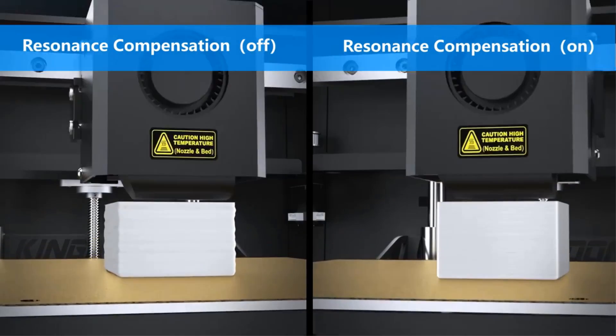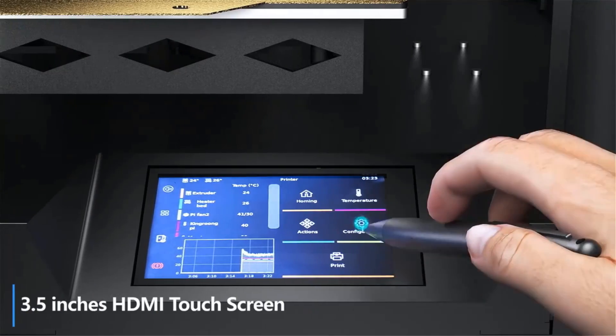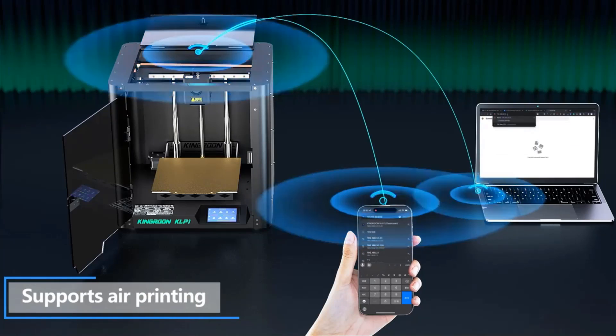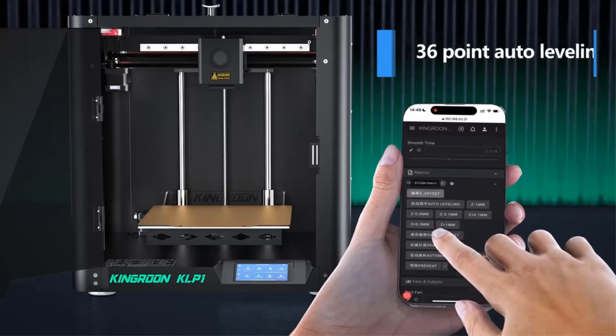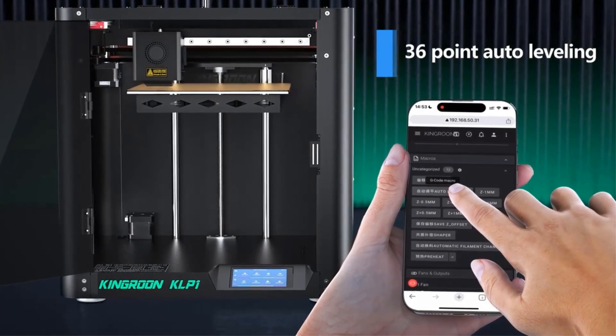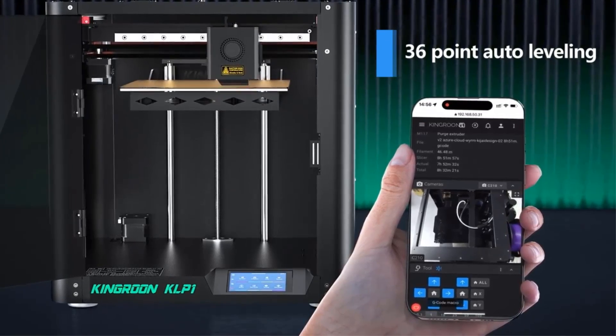High quality print with less waiting time. Kingroon KLP-1 has 500 mm per second high speed printing and 10,000 mm/s² acceleration. The built-in IDXL 345 module ensures high quality print under fast print speed with active vibration compensation.